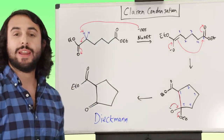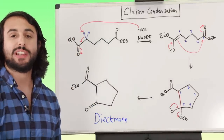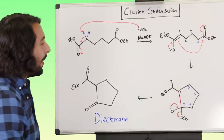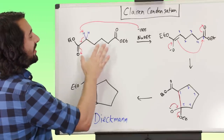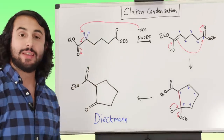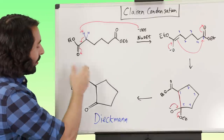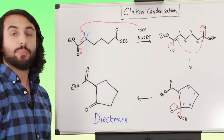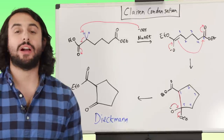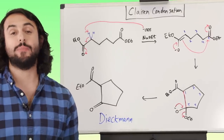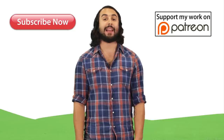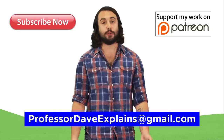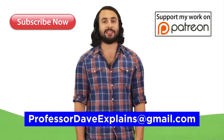The Dieckmann condensation just indicates that it is an intramolecular, cyclization reaction, but mechanistically it's the same as Claisen condensation: starting with an ester substrate, giving a beta-dicarbonyl product. That's what we need to know about Claisen condensation and Dieckmann condensation. Thanks for watching — subscribe to my channel for more tutorials, support me on Patreon so I can keep making content, and feel free to email me at professordaveexplains@gmail.com.